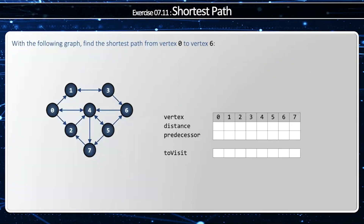Let's take a look at a more complicated example. I want to find the shortest path from vertex zero to vertex six. So I'm going to start with vertex zero — the distance to vertex zero is zero because it's myself — and then I'm going to pop that one off my queue. Zero can go to one, and so my current distance plus one is one, and my predecessor is zero, and I got to push one onto my two-visit queue. And then I can visit two, and two's distance is one, just like one's was, and my predecessor is also zero, and I'm going to push two onto my queue. And now I can also visit four, and four's distance is likewise one, and my predecessor is also zero, and I'm going to push four onto my queue.